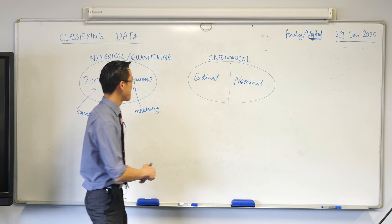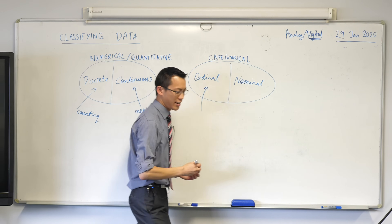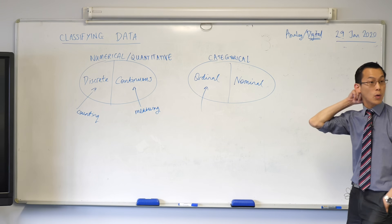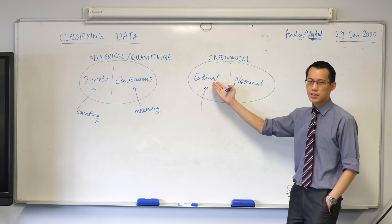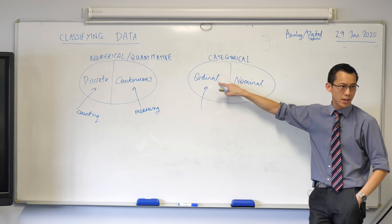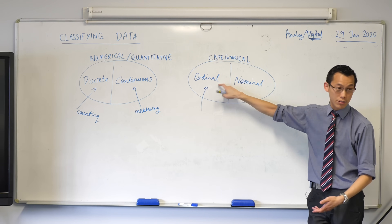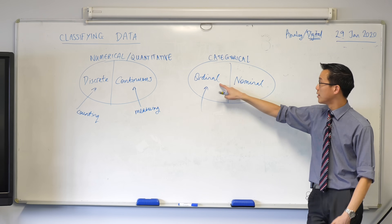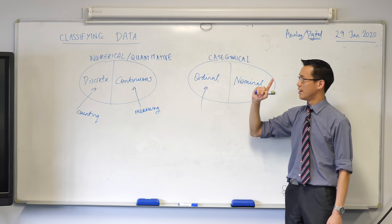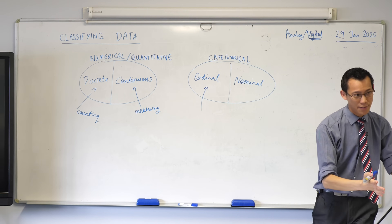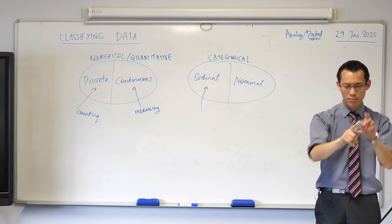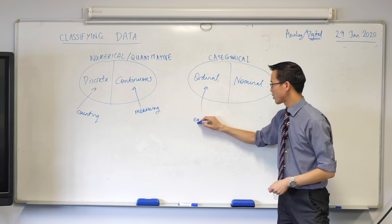Now, why am I quickly digging into ordinal? Because it's the one that people often find quite confusing, because it seems like it's sort of both at the same time. If you can put it in order, and sometimes these literally have numbers on them, but they aren't numerical data. Sometimes you get data that's got numbers in it, but it's not numerical. Let me give you a few examples.